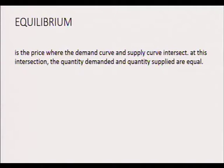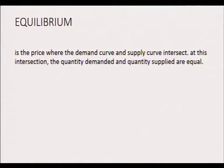After studying demand and supply, there is a point where they meet — where both buyers and sellers are willing to transact at a given price. This is called equilibrium. We define it as the price where the demand curve and supply curve intersect. At this intersection, the quantity demanded and quantity supplied are equal. In simple terms, consumers are happy to pay the price that suppliers charge. You should also be able to illustrate and interpret equilibrium on a graph.